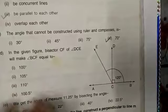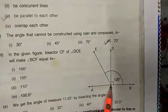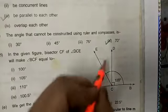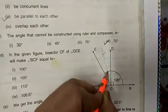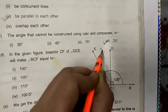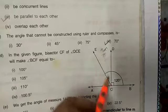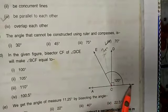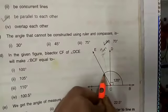In this figure, bisector CF of angle DCE. This is angle DCE. If we are going to bisect this angle, we are going to get a line in this way. So the question is bisector CF of angle DCE will make angle BCF equal to. This angle is 120, this part is 90, it means this one is 30 and this is half of 30, which is 15.